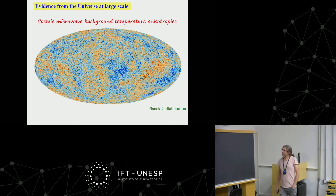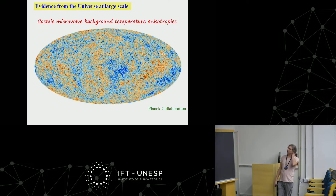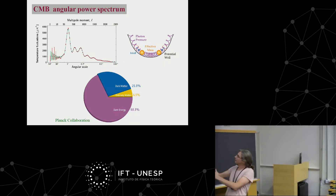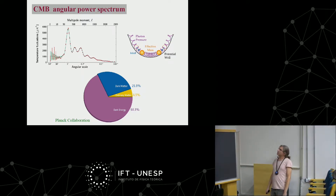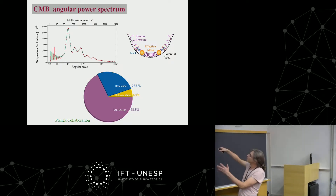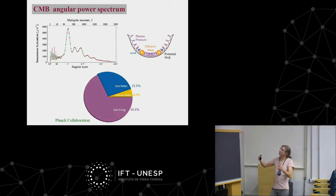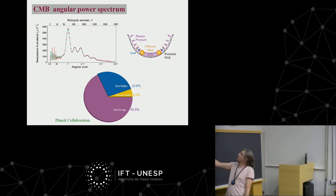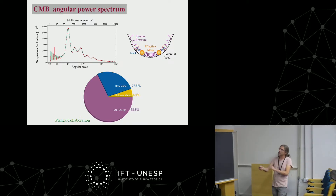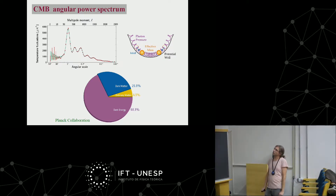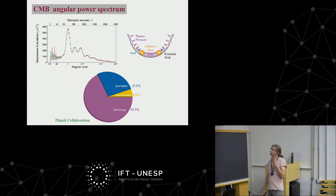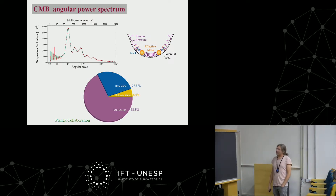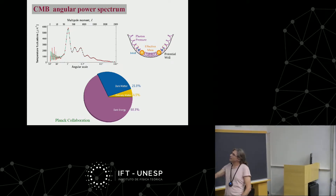There is also evidence for dark matter at large scales, from observations of the cosmic microwave background temperature anisotropies. In the universe, there are density perturbations creating potential wells; matter falls into these potentials while the plasma is being rarefied due to photon pressure. This competition leads to acoustic oscillations imprinted in the CMB power spectrum. The potential well is induced by matter, and if all matter were in the form of baryons, it would be impossible to reproduce the pattern of acoustic peaks — it is necessary to introduce a dark matter component to make the potential well deep enough.